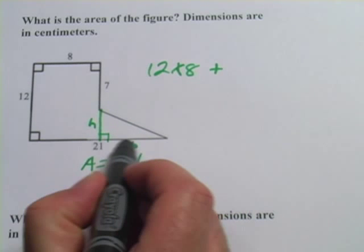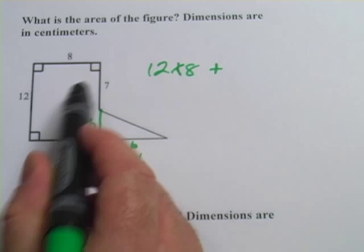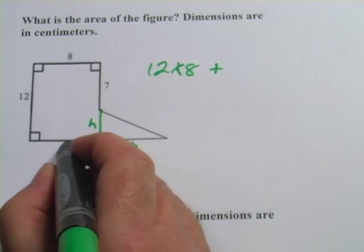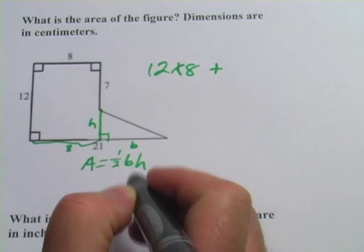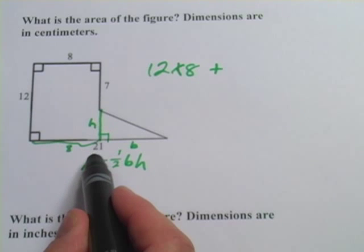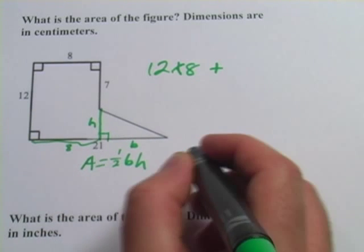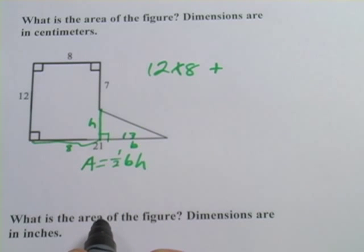We know that this whole length is 21, and this portion of it is 8, so this portion must be 8 down here. When we subtract 8 from 21, we should get 13, so that must be the base of the triangle.